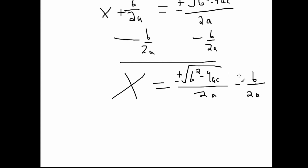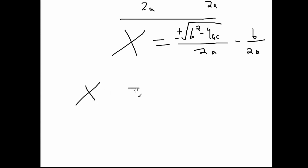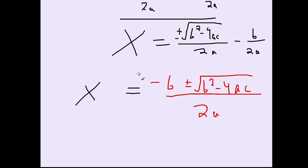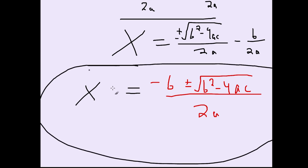Because these two terms have the same denominator, we can just combine them. So x equals negative b plus or minus the square root of b squared minus 4ac, all over 2a. And that's the quadratic formula.